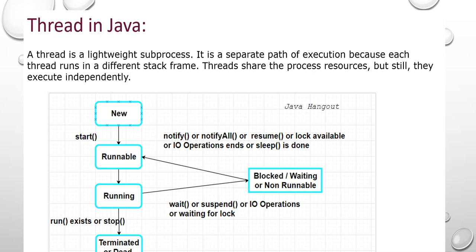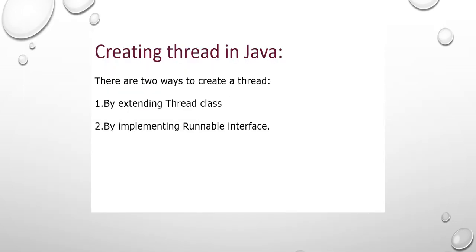There are two ways we can create threads in Java. One is by extending the Thread class, and another one is by implementing the Runnable interface. Thread is a class; Runnable is an interface. Thread has many methods, while the Runnable interface has only one method — that is the run method.